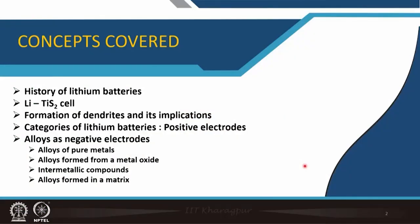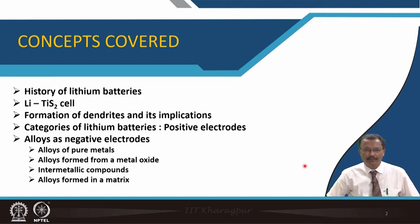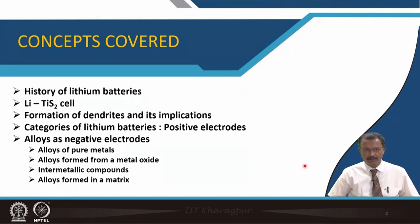First we will talk about the history of lithium ion battery and where it started. Then I will show you the image of the first lithium ion cell, which had lithium as the metal anode and titanium disulphide as cathode material. I had already introduced molybdenum disulphide when talking about crystal structure, and similarly titanium disulphide was used as one of the positive electrode materials. Then the implication of using lithium metal as negative electrode will be described in terms of the formation of dendritic growths and what are the implications of this dendrite growth.